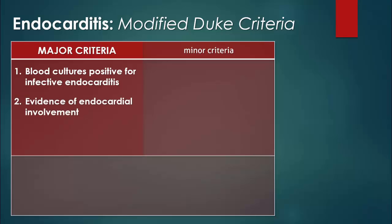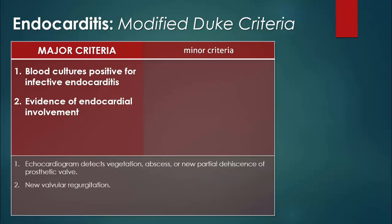The second major criteria is evidence of endocardial involvement. This criteria is established in one of two ways: if an echocardiogram detects a vegetation, an abscess, or a new partial dehiscence of a prosthetic valve, or if there is new valvular regurgitation.